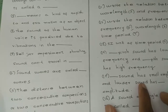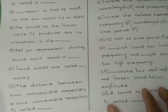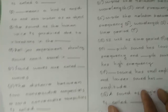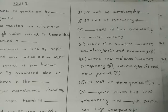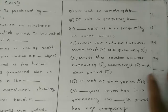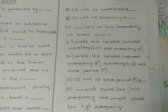Q6: Sound waves are called dash types of waves. Q7: The distance between two consecutive compressions or two consecutive rarefactions is called dash. Q8: The unit of wavelength is equal to dash.